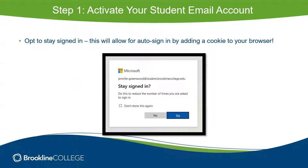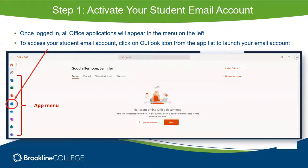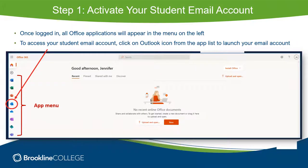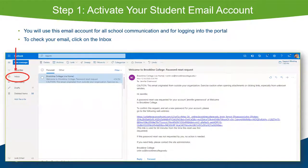Opt to stay signed in if you're using a computer that's solely yours or used only by people you trust. If you're using a public or shared computer, don't use this option. Once logged in, all office applications will appear on the menu on the left. To access your student email account, click on the Outlook icon — a little blue envelope with an 'O' — from the app list. You will be inside of your student email.